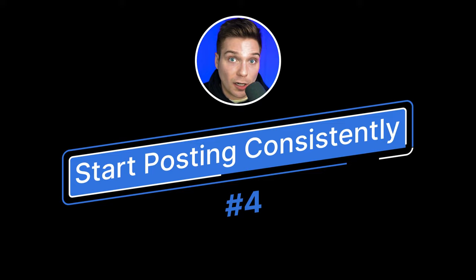Step number four is to start posting consistently. Instagram is a data machine — it is constantly scanning through everything it can to help make better decisions as to who to show what content. Everything you've done to this point has helped Instagram figure out who to initially show your content to. But ultimately it takes Instagram making these tests, showing your content to the people it thinks want it, and then based on the engagement and data, making better future decisions to push your content further to more of the right people. You just have to give it time and post consistently, allowing Instagram to collect more and more data.